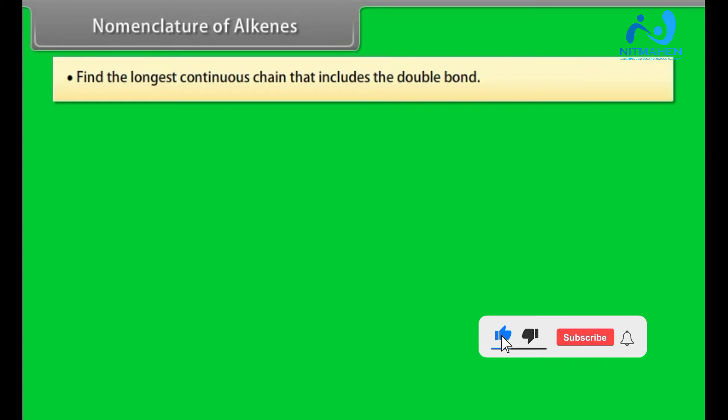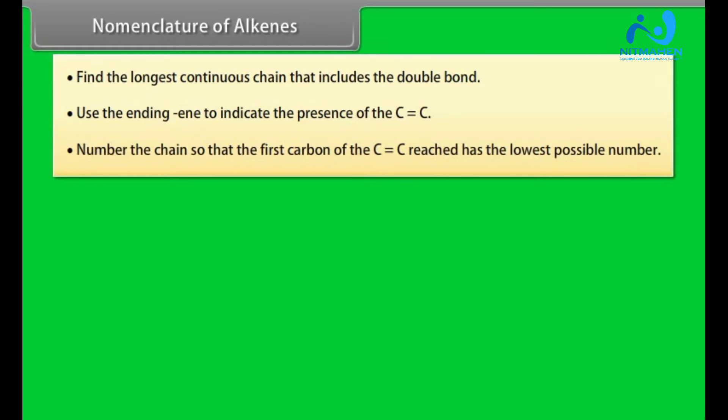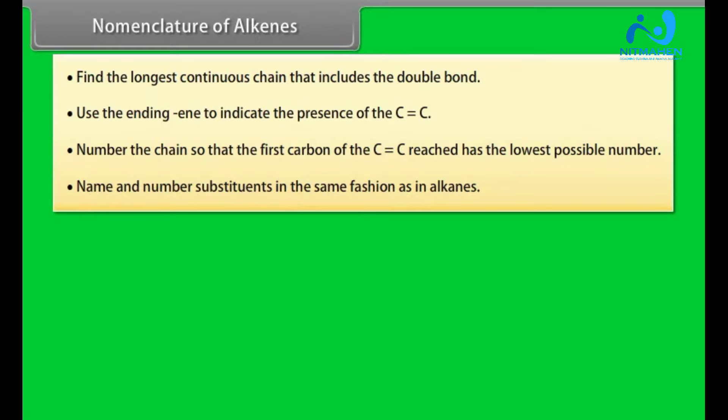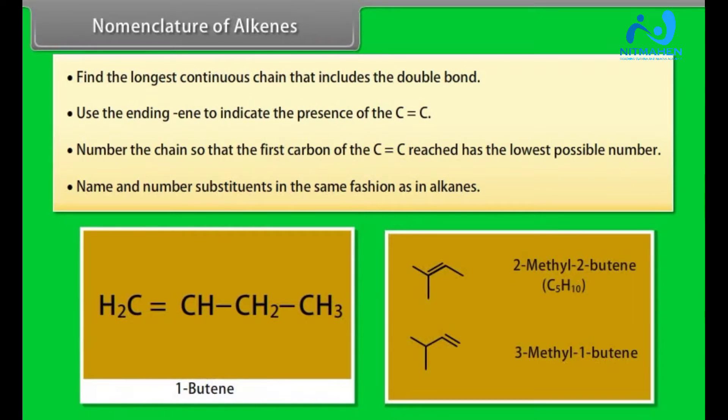Nomenclature of Alkenes. Step 1: Find the longest continuous chain that includes the double bond. Step 2: Use the ending -ene to indicate the presence of carbon-carbon double bond. Step 3: Number of the chain so that the first carbon of the carbon-carbon double bond has the lowest possible number. Step 4: Name and number substituents in the same fashion as in alkanes. This is 1-butene and these are 2-methyl-2-butene and 3-methyl-1-butene.